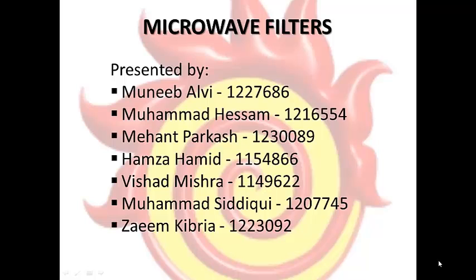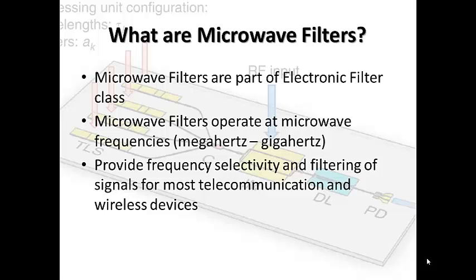Hello everyone, today we're discussing our research on microwave filters. Microwave filters represent a class of electronic filters designed to operate on signals in the megahertz — medium frequency — to gigahertz range, which is an extremely large frequency. This frequency range is used by most broadcast radios, televisions, and wireless communication devices such as cell phones and Wi-Fi routers. The function microwave filters perform on these devices is to provide frequency selectivity and filtering of signals at microwave frequencies.